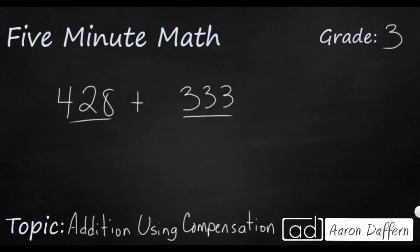Right now, if I were to do 428 plus 333, I might be able to do it manually, but I know I'm going to have to regroup because I've got an eight and a three in the ones place in each digit, so I'm going to have to regroup at least once.